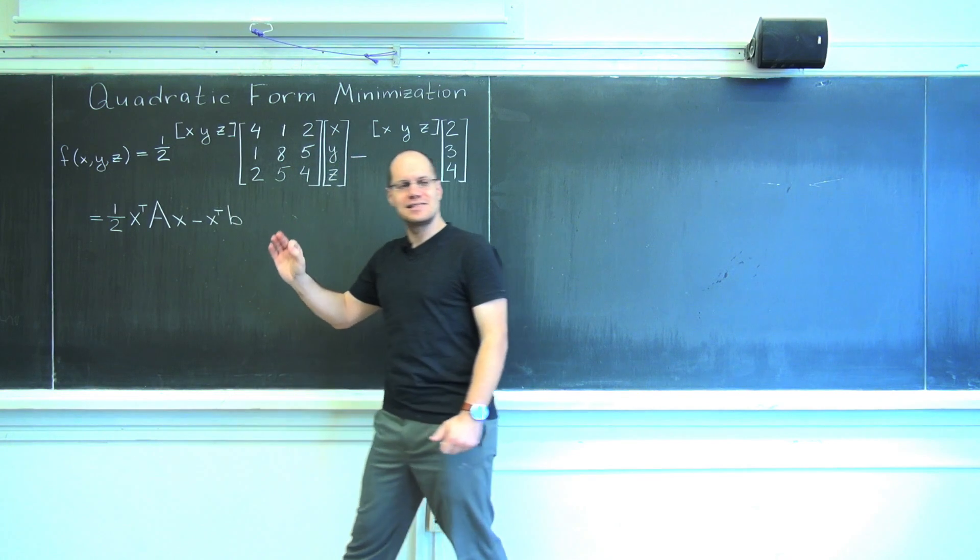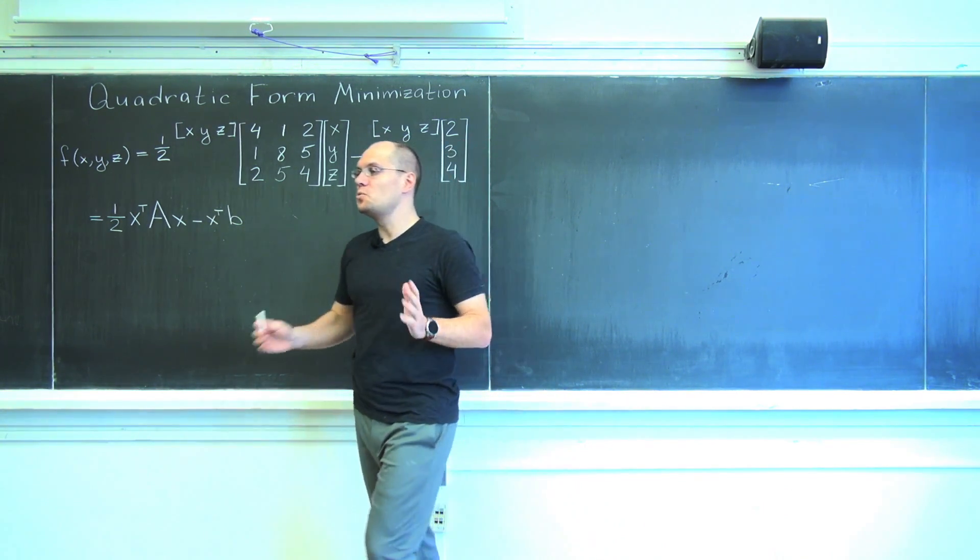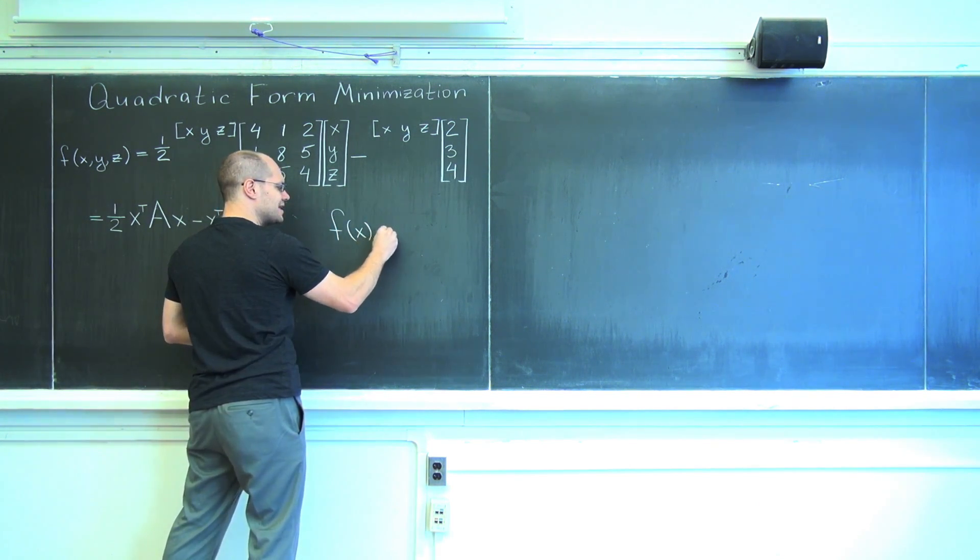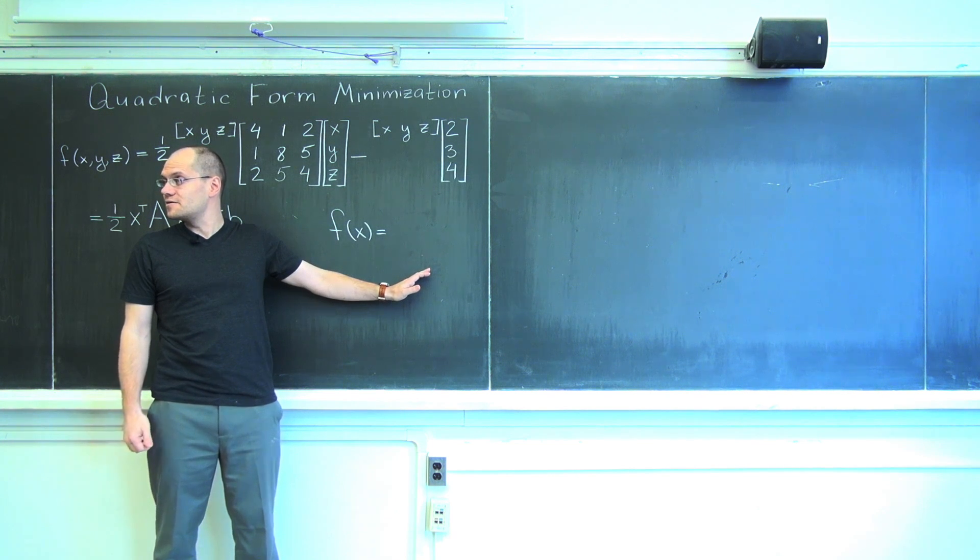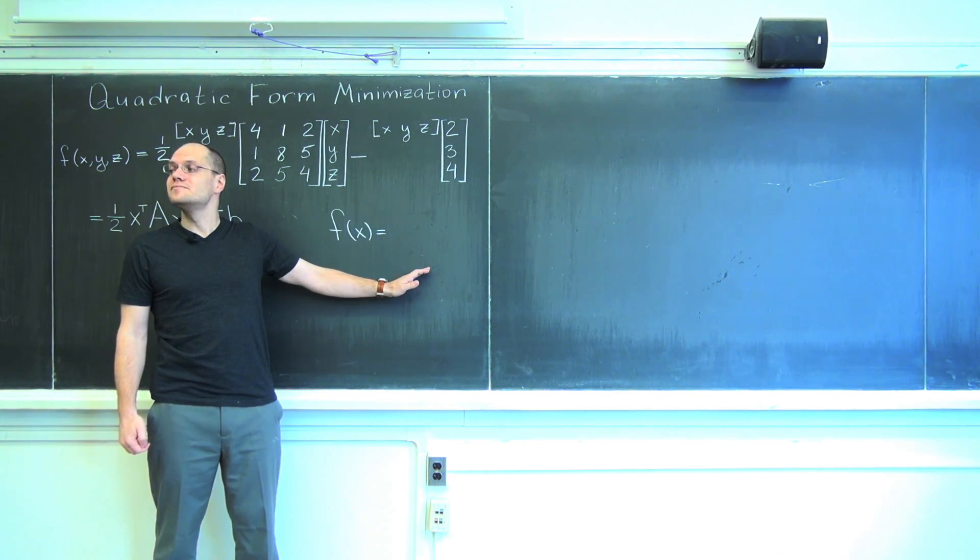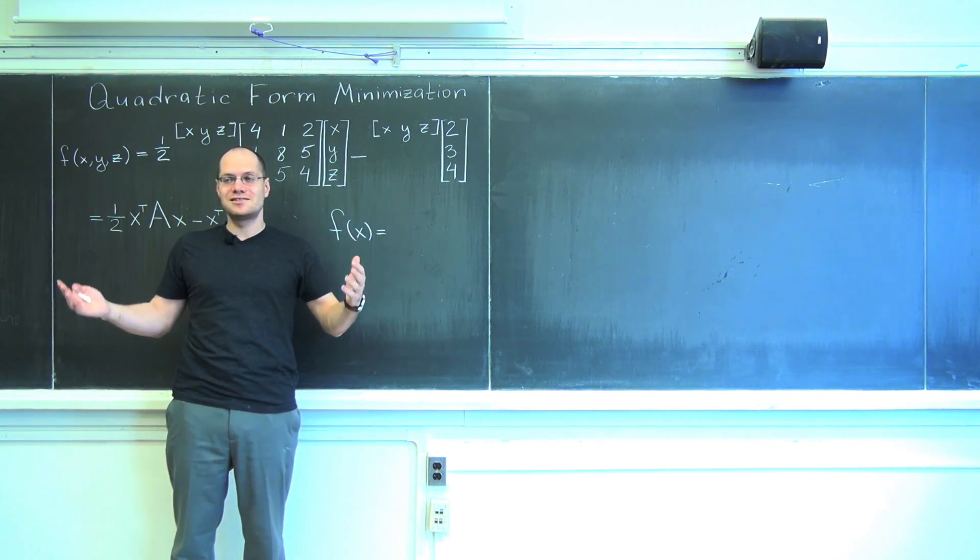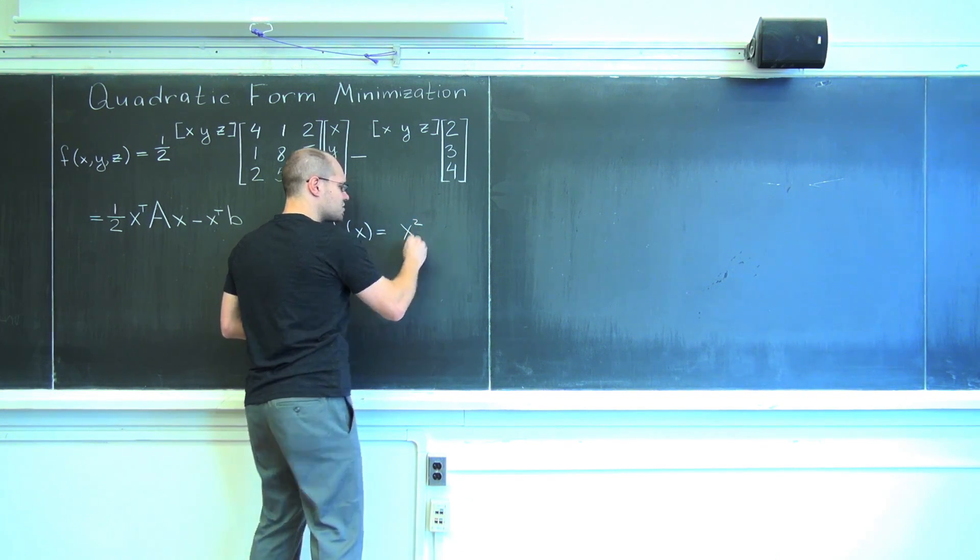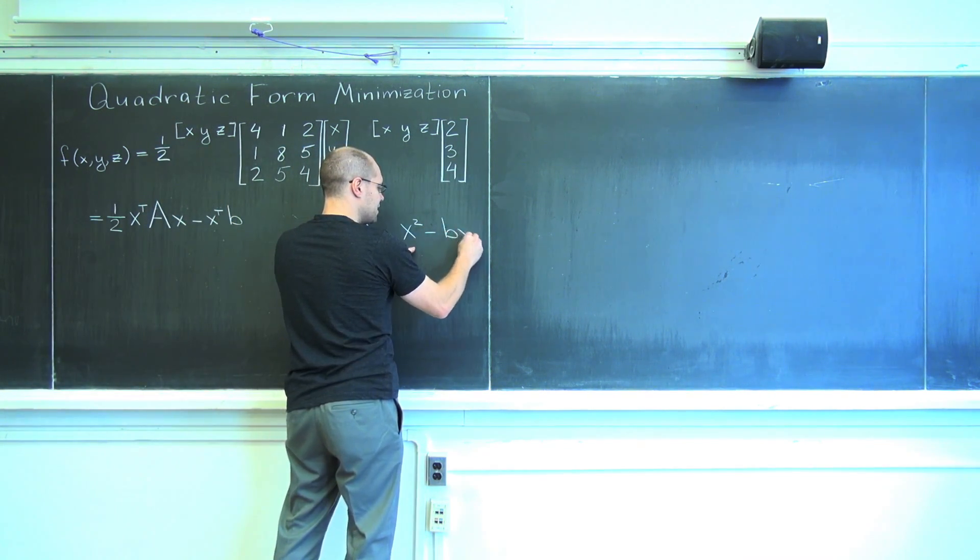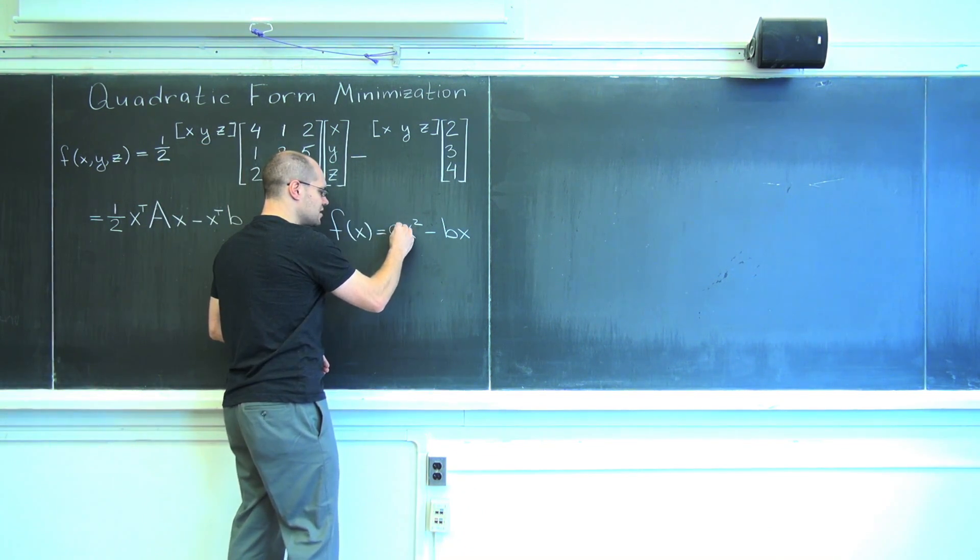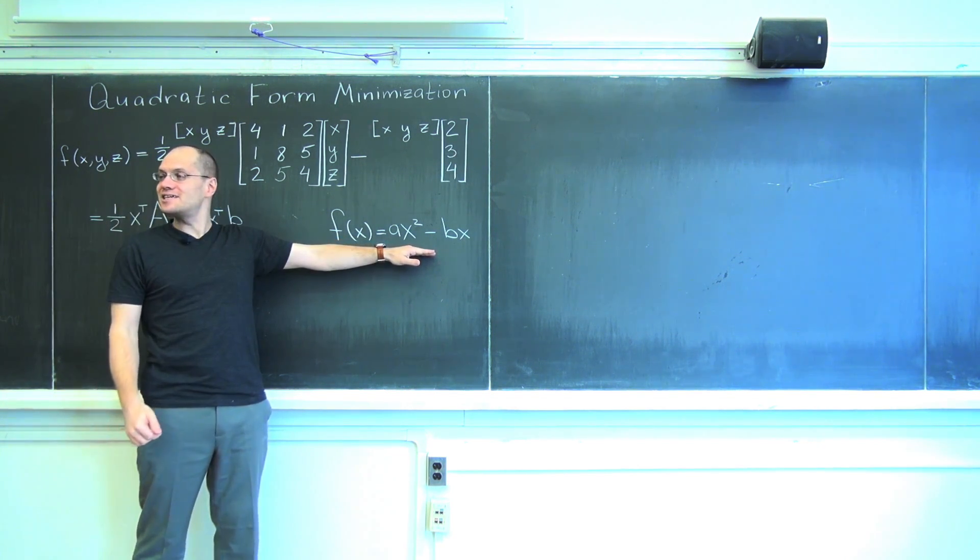We're really considering the simplest possible function of many variables for which the question of minimum is interesting. What would be that function in one dimension? What would be the simplest function of a single variable x which has a minimum? What function? The simplest: x squared. But it's also a little bit boring because the minimum is at zero, so you shift it: x squared minus bx, and then maybe make it more interesting by putting an a here. For this function, tell me where the minimum occurs.